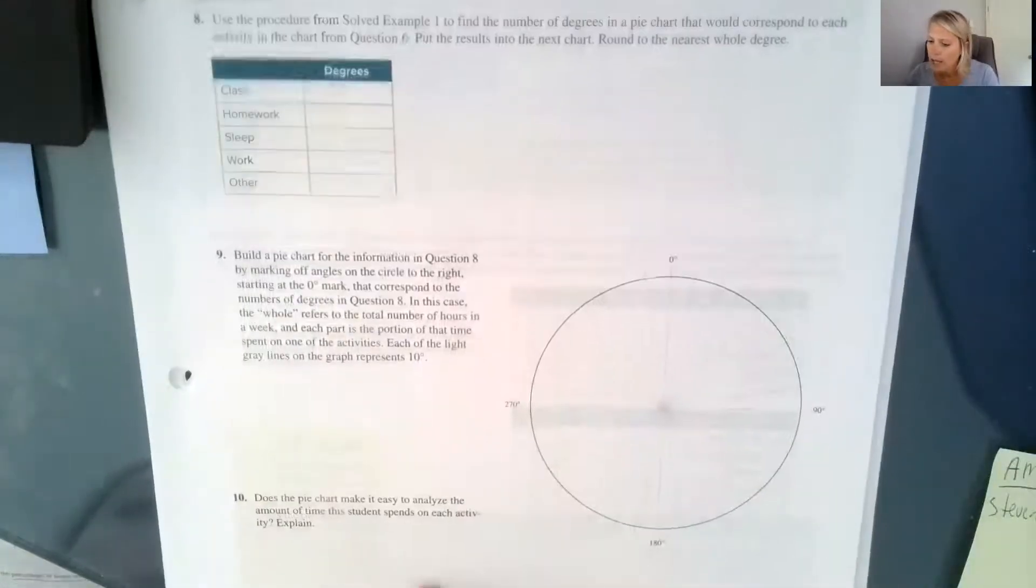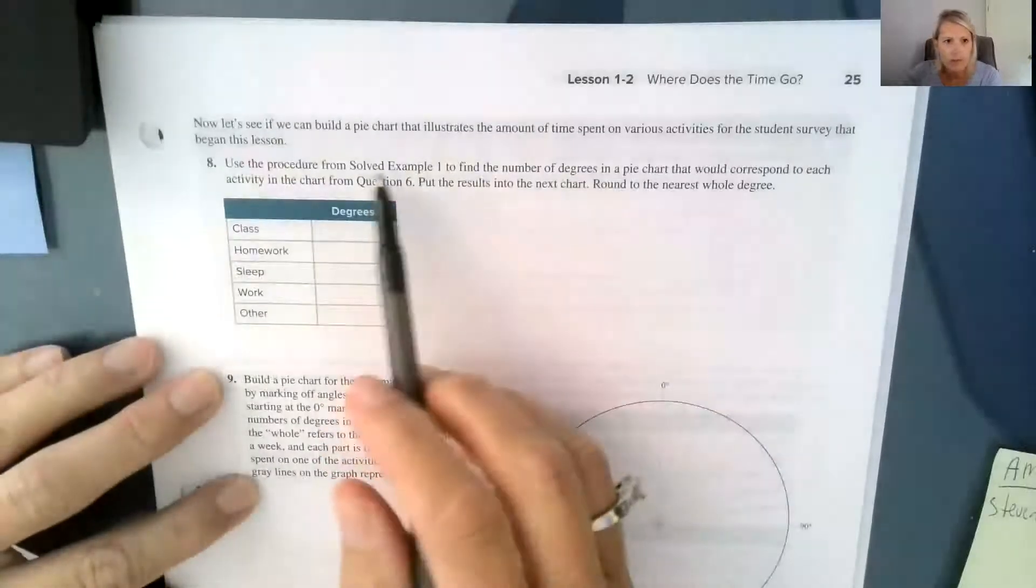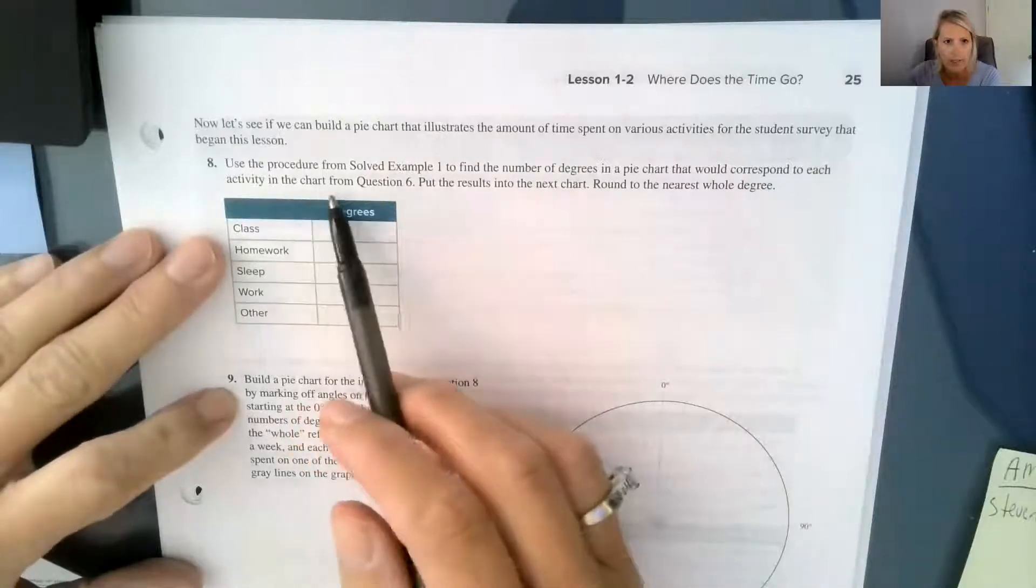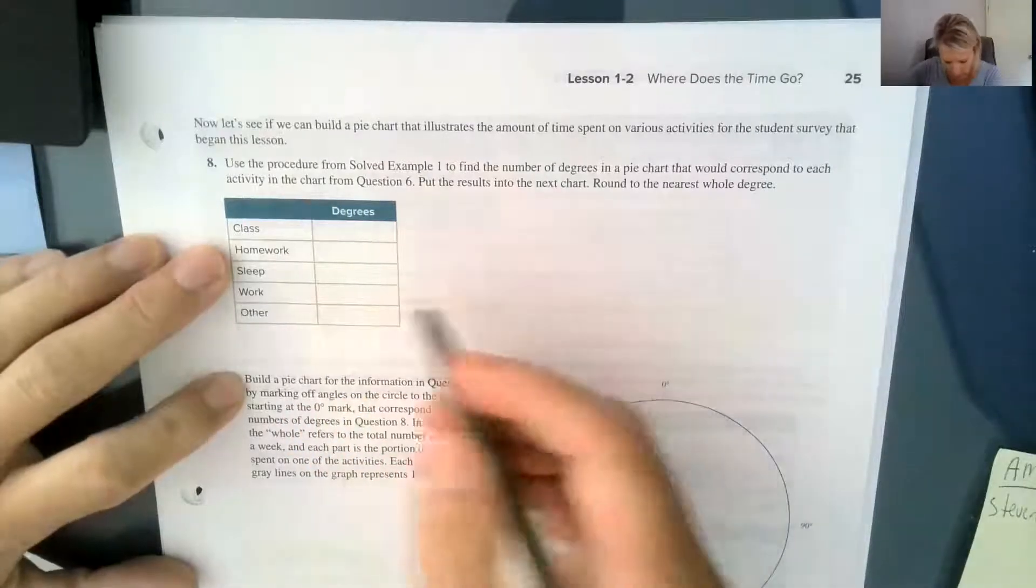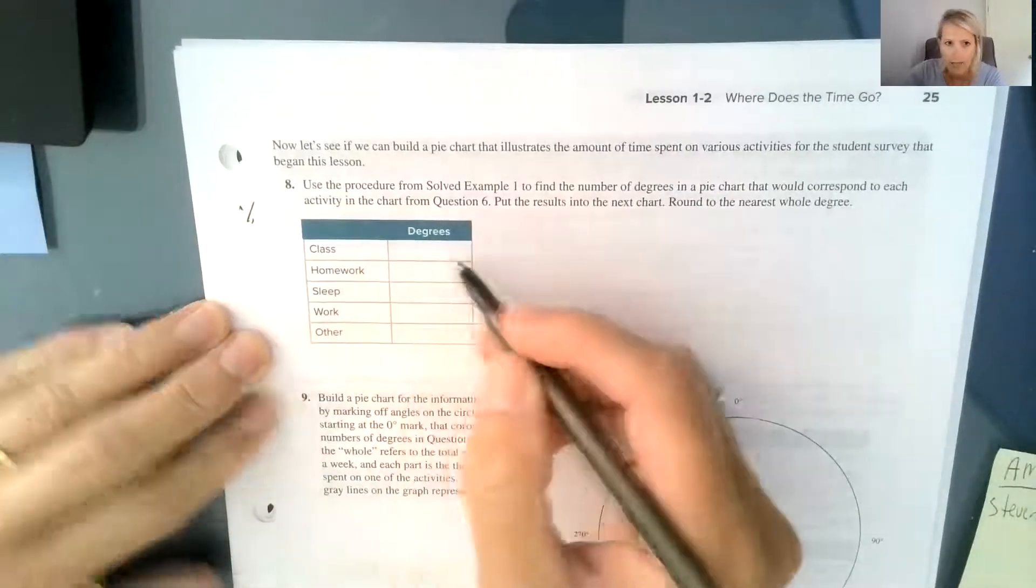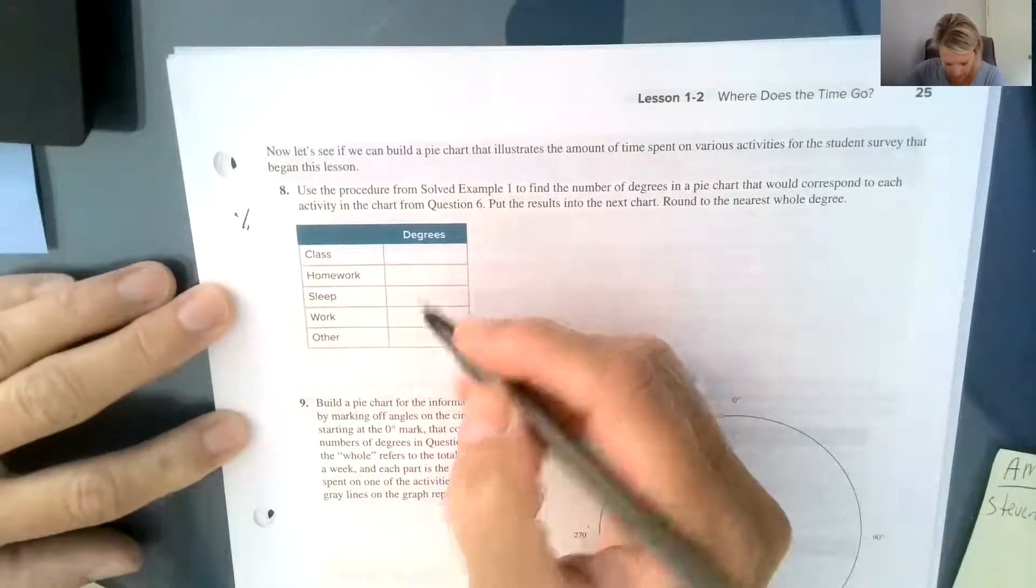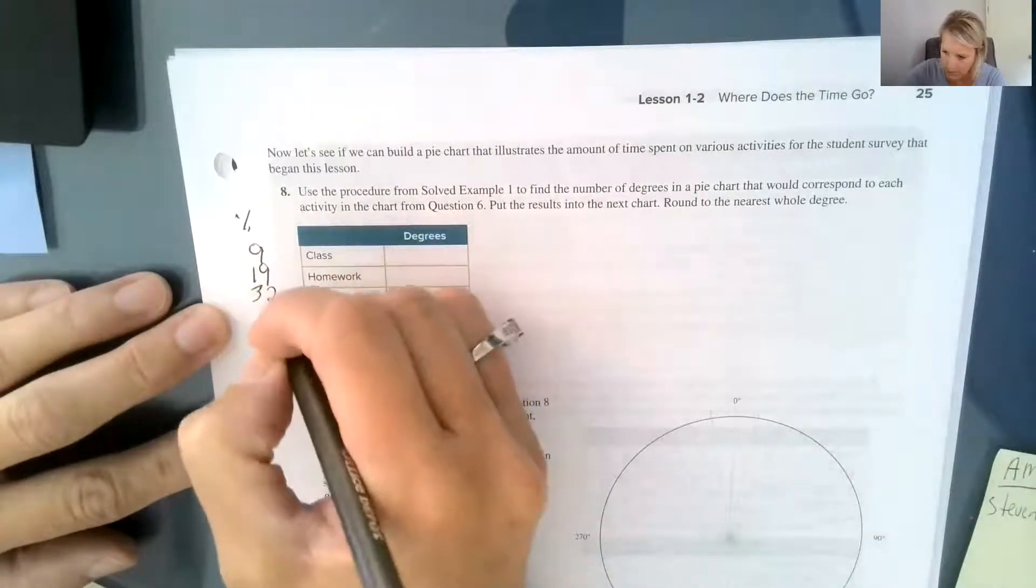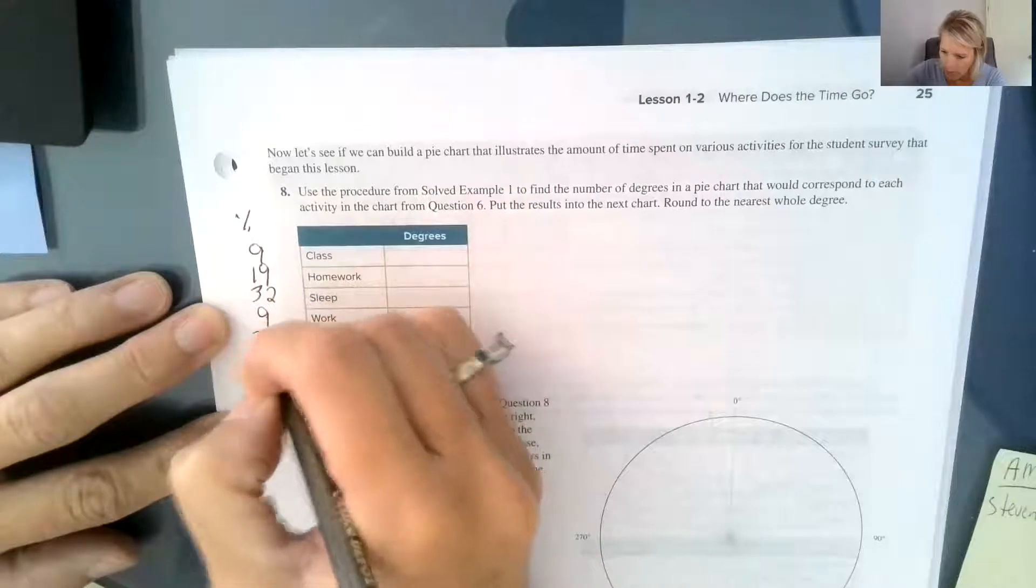So, on question number eight, it says, use the procedure from example one to find the number of degrees in a pie chart that would correspond to each activity in the chart from question six. So I'm going to put my percentages over here so that they can help me figure out my degrees. So my percentages were 9, 19, 32, 9, and 31.